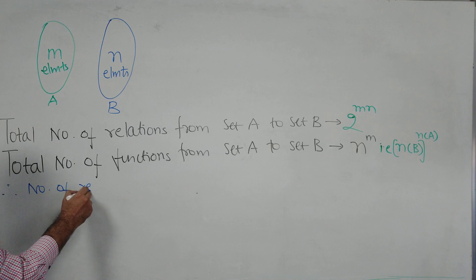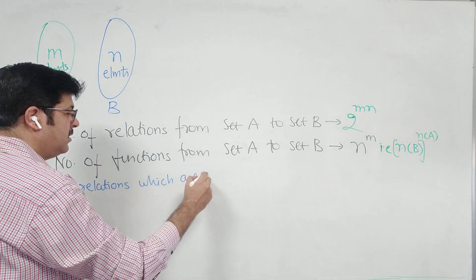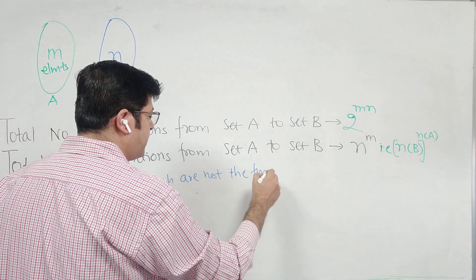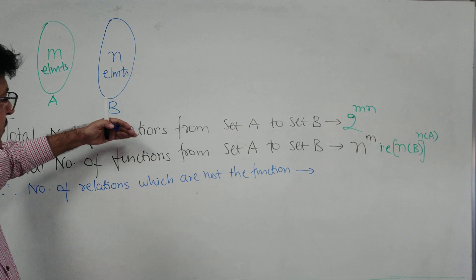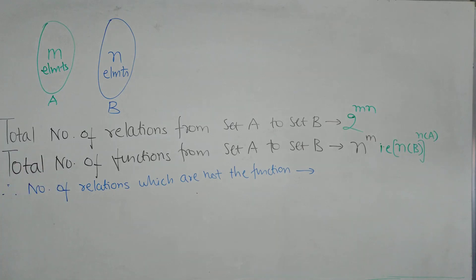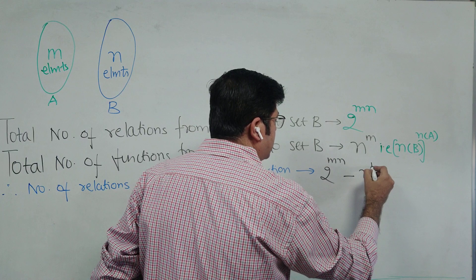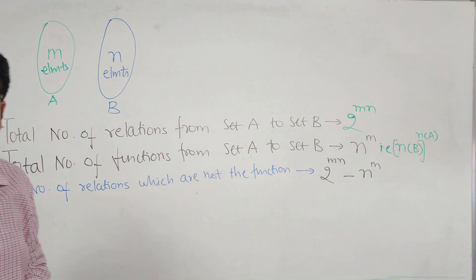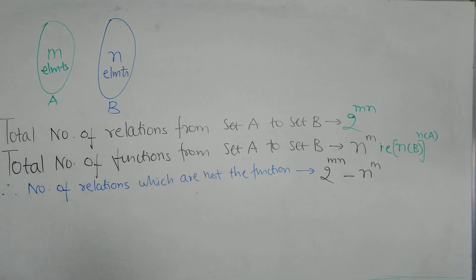Number of relations which are not functions: as you know, every function is a relation but every relation need not be a function. So the number of relations which are not functions equals the total number of relations minus the number of functions. Pause the video and note it — number of relations, number of functions, number of relations which are not functions.